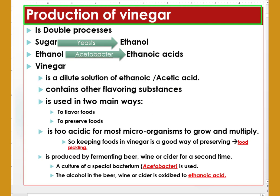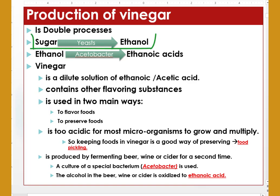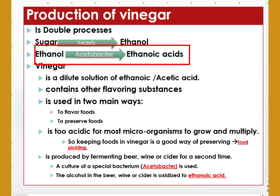Vinegar production is a double fermentation process. The first step: sugar must be changed to ethanol through the action of yeast cells. The second mechanism: ethanol should be changed to ethanoic or acetic acid through the action of acetobacter. Vinegar is a dilute solution of ethanoic or acetic acid in water.